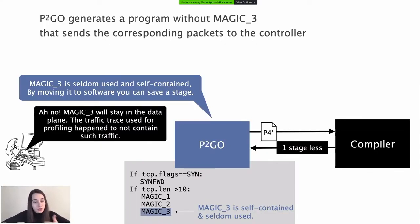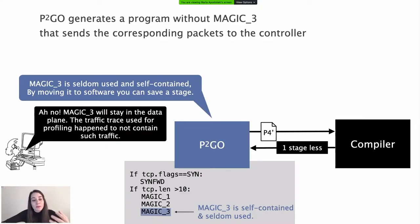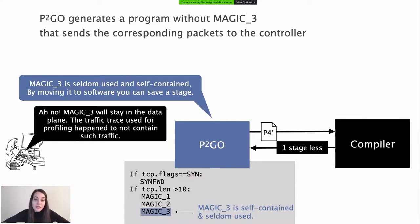This profile-guided optimization was not helpful in this case, but let me explain why this can happen and why it is still okay. The traffic trace used during profiling might not contain traffic on which the table is applied — in our example, Magic 3. In other words, the trace might not be representative with respect to the observation. Yet, the programmer can easily spot this mismatch when reviewing the observation that guided the optimization and then reject the suggested optimization, as in our example.